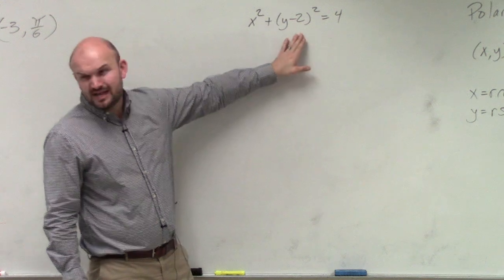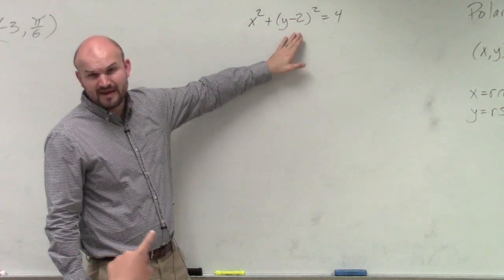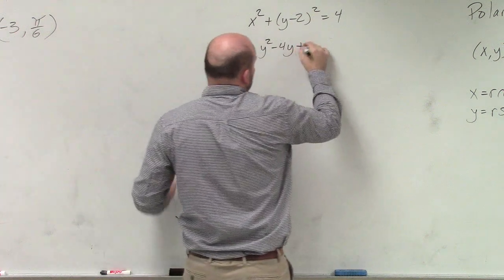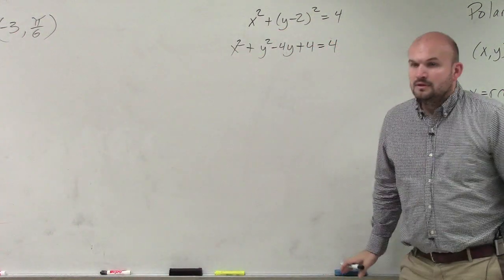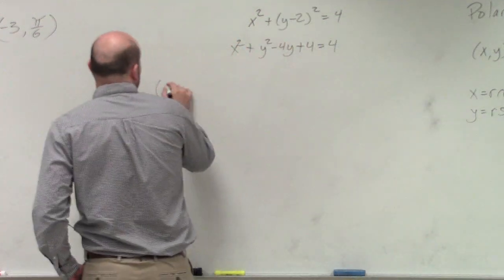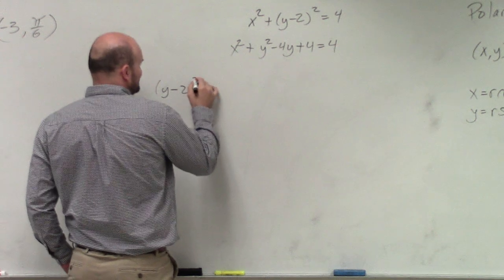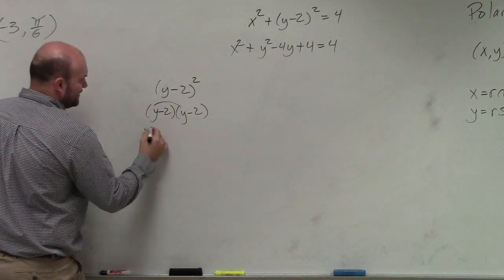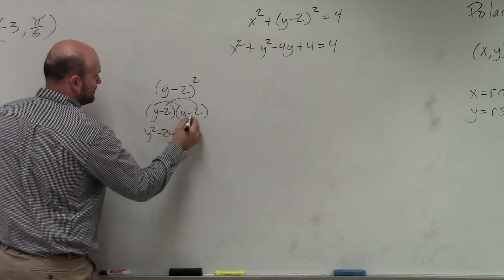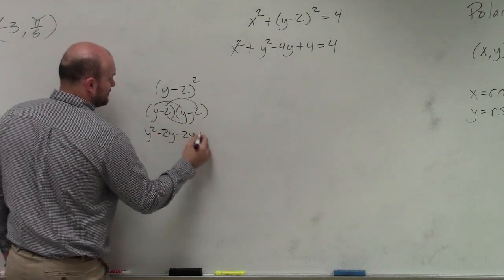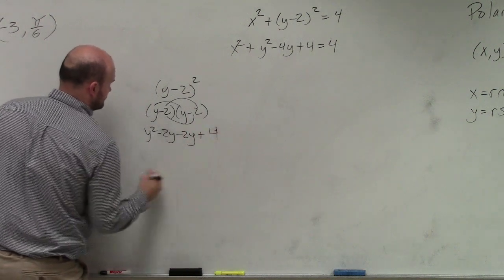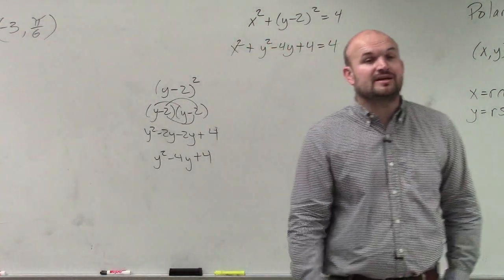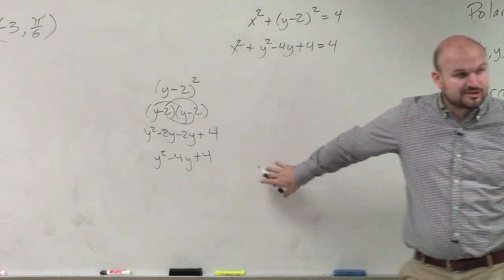Right now we don't have anything directly. However, I do see I have y minus 2 squared, which means I could expand that. So I could say x squared plus y squared minus 4y plus 4 equals 4. Back to algebra 1 and algebra 2 — we need to make sure we remember expanding binomials.